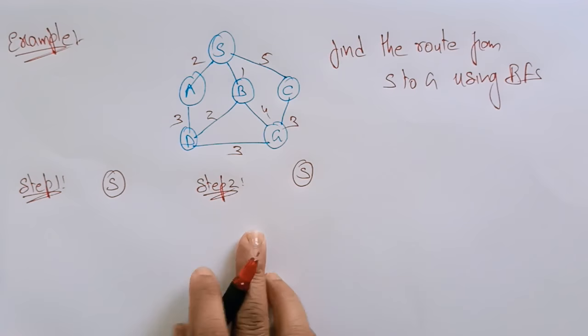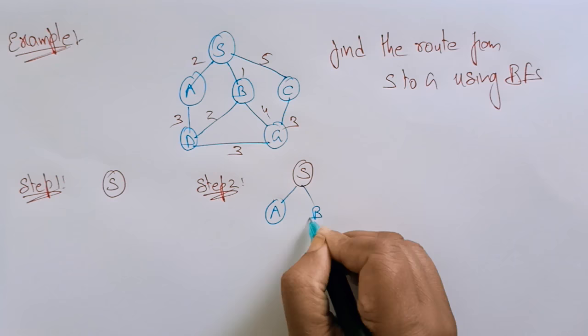What are the successor nodes of this root node? A, B, and C. The weights are 2, 1, and 5. That's step 2.